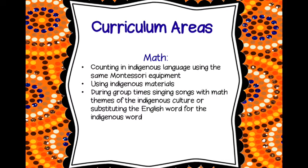Now curriculum areas. In math — or maths, as we say here in New Zealand — one thing you could do is counting in the indigenous or minority language using the same Montessori equipment you have in your class. If you have a pink tower, use the pink tower; if you have coloured beads, use those. The same goes for your geometry equipment — use the triangles to discuss size and name the triangle in the indigenous language.